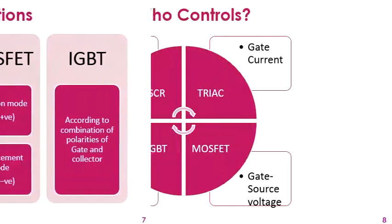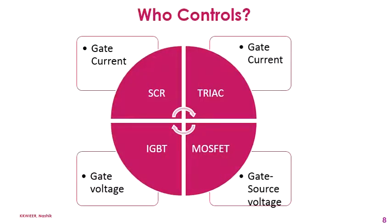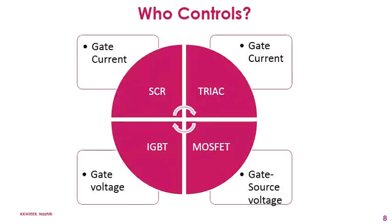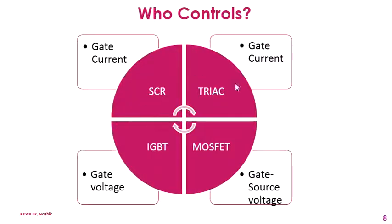The most important difference is what controls the operation of these semiconductor devices. As shown in the diagram, SCR and TRIAC are current-controlled devices, whereas IGBT and MOSFET are voltage-controlled devices. We have already studied in detail how current and voltage control each of these four semiconductor devices.